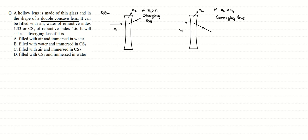Now it can be filled with air. We are given in the question that the material can be filled with air, water of refractive index 1.33, or CS2 of refractive index 1.6. It will act as a diverging lens — that is the condition asked — so n2 inside should be greater than n1.